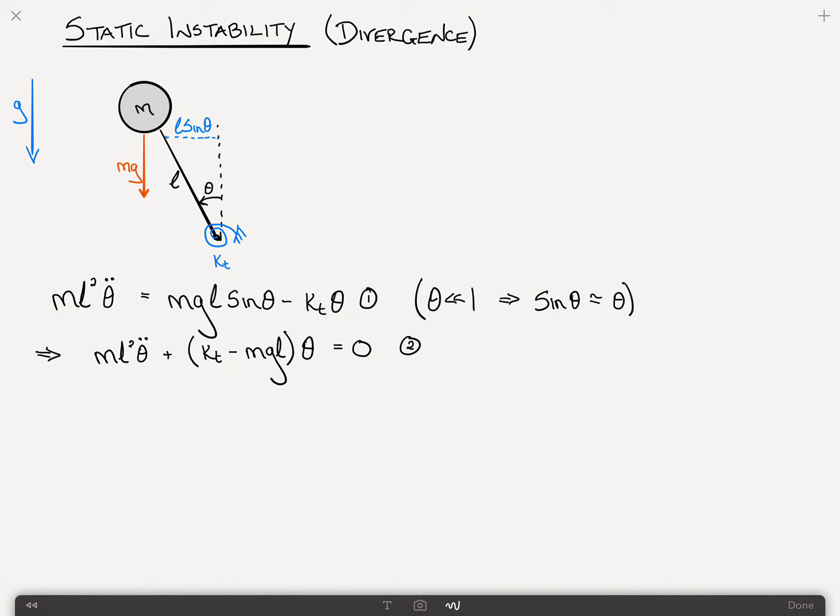The way we solve it is, as usual, where we assume that theta is equal to some constant times e to the r t. This yields our characteristic equation, which says m l squared r squared plus k t minus m g l is equal to zero. That is the characteristic equation.